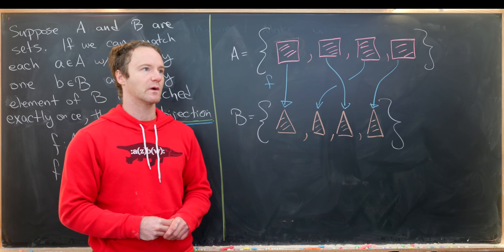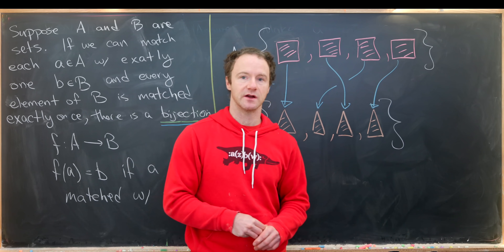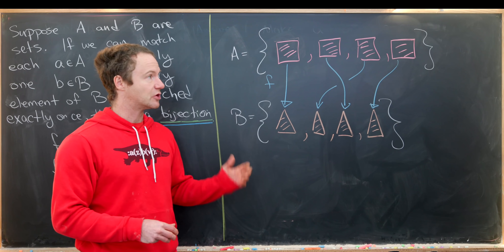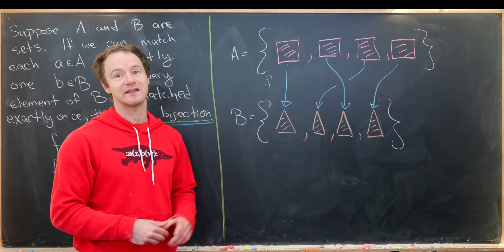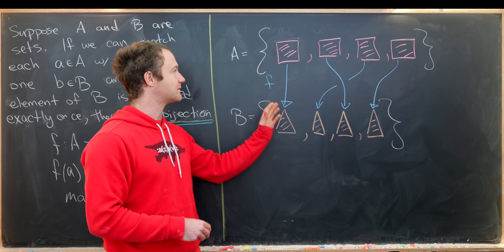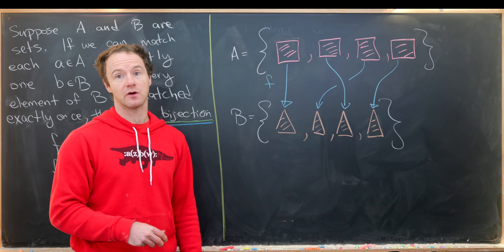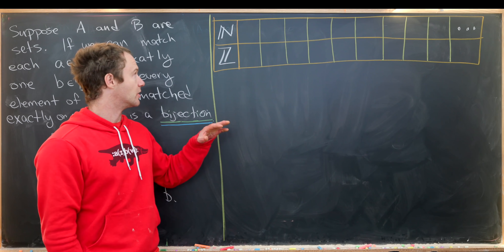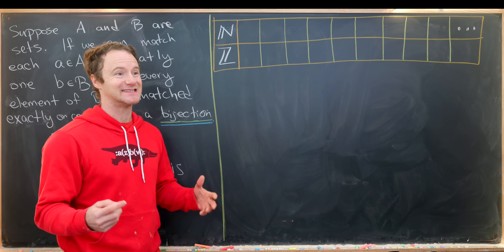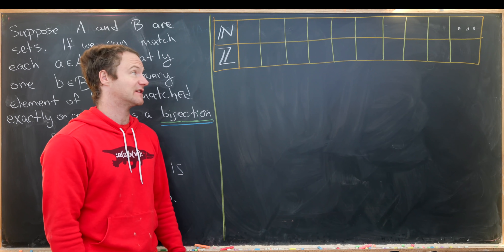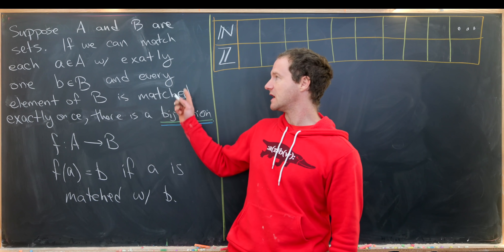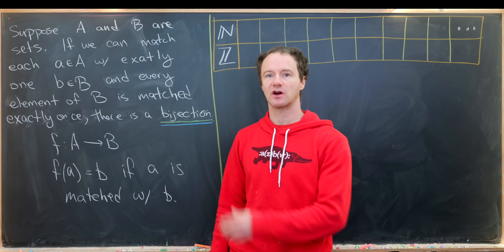Now let's look at a really interesting example where we use this idea to show that two sets with infinitely many elements have the same number of elements. We'll show that the set of natural numbers and the set of integers have the same number of elements. Even though there are infinitely many elements in each, we can show this by making a bijection like we described.